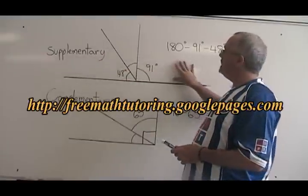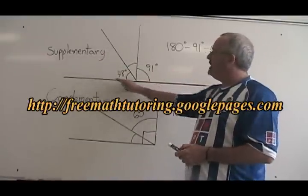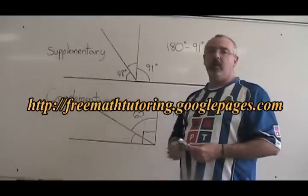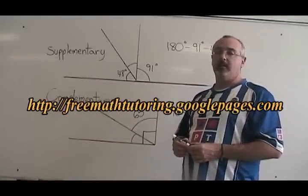In this diagram on the top, we have a straight line at the bottom. A straight line is a straight angle, and a straight angle is 180 degrees.